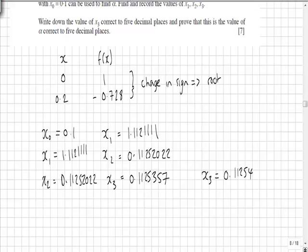We also have to prove that this is the value of α correct to 5 decimal places. So we then take the upper and lower bound of those numbers. In this case, the upper bound would be 0.112545 and the lower would be 0.112535.